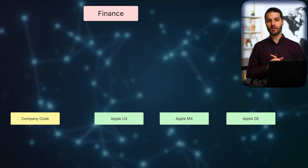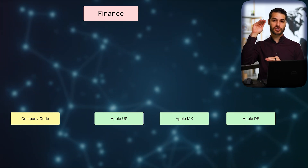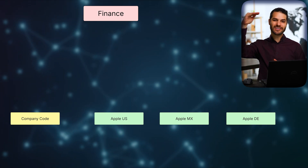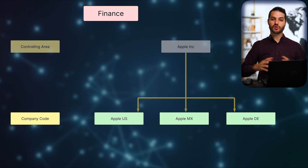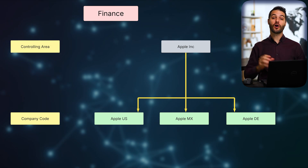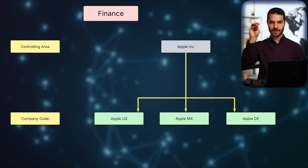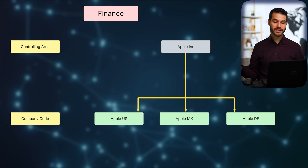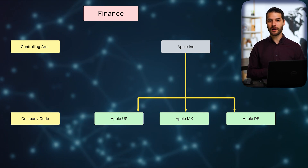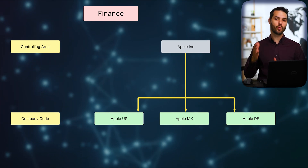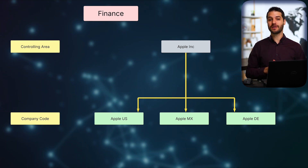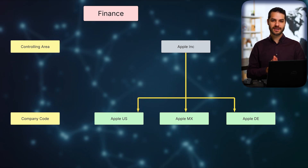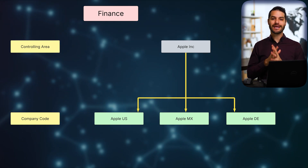For finance, it's best to start at the top of the pyramid. Apple, with its US, Mexico, and Germany subsidiaries, would have some entity at the top — call it Apple Inc. All those company codes link into Apple Inc., which is called a controlling area — the top of the pyramid organizationally. In S4 HANA specifically, unlike older SAP products like ECC, you will almost always have just one controlling area, even though technically you can have more.